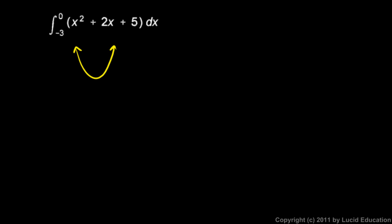We can just go through here and integrate this term by term. So this is going to be x cubed over 3 plus x squared plus 5x, and all of that will be evaluated from negative 3 to 0.